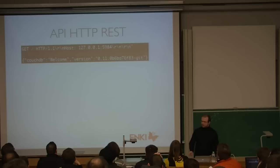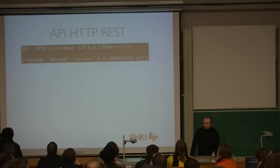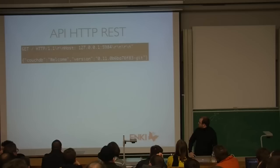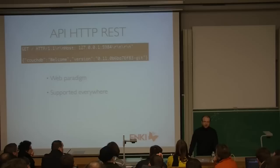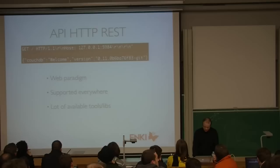The first thing when you install CouchDB and go to the URL: the only way to know if it's working is to go with your browser or curl to check. You get a welcome message and a version number. What does it mean that it's web? HTTP is supported everywhere — if you develop in Java, Python, Ruby, whatever, each language has its own HTTP client.